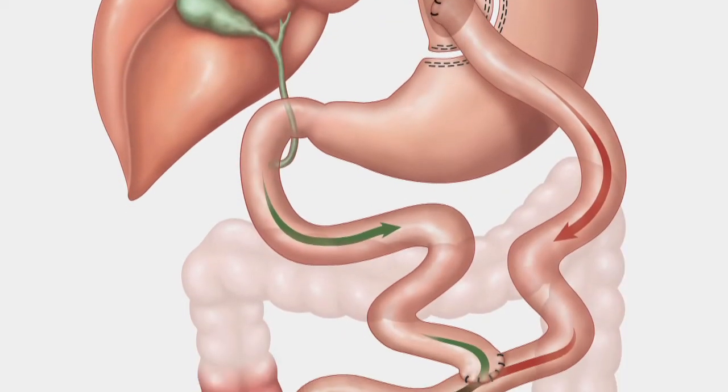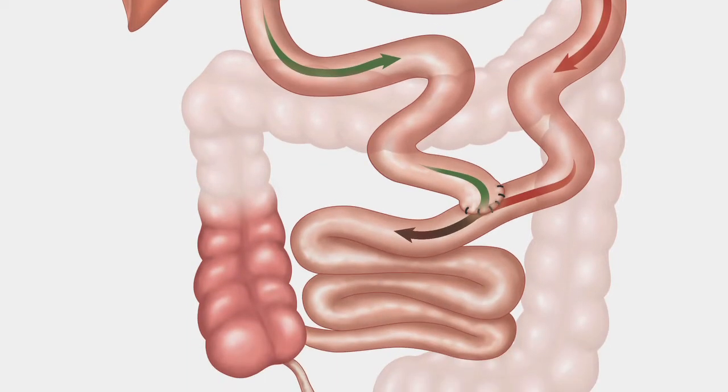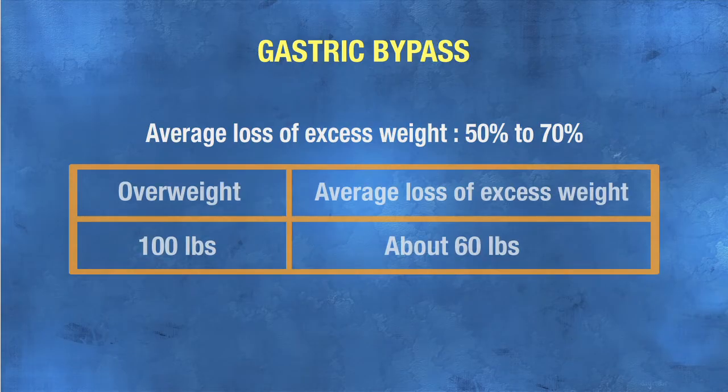A part of the small intestine is then connected to the new stomach. Since food now takes a shortcut from the new stomach directly to the small intestine via the pylorus, a part of the small intestine is not used to absorb food. This is the malabsorptive aspect of this surgery. This procedure results in mid-range weight loss. Following the intervention, you will lose on average from 50% to 70% of your excess weight. If you are overweight by 100 pounds, you will lose about 60 pounds.